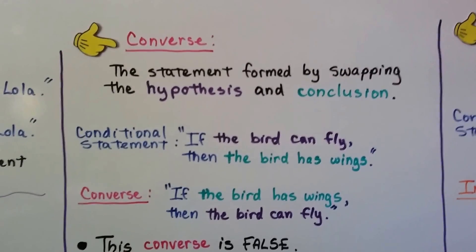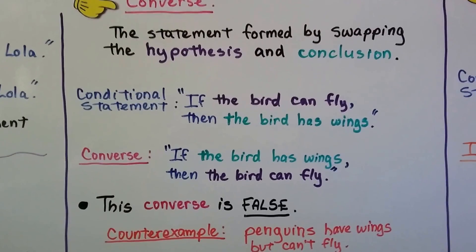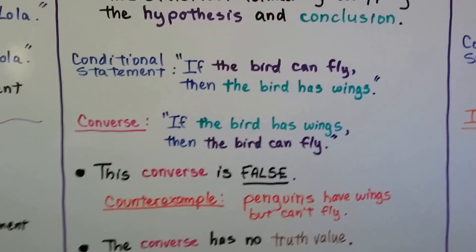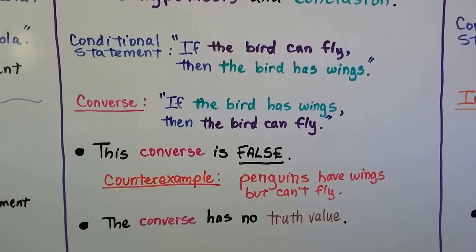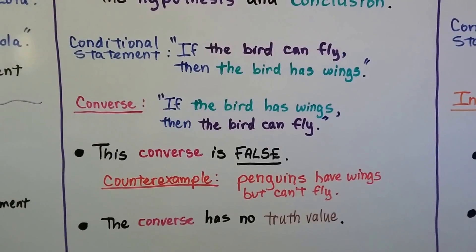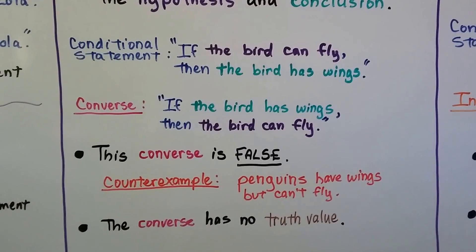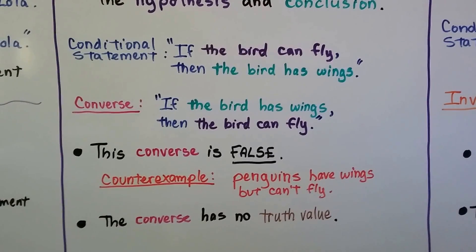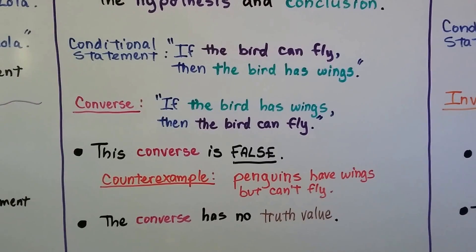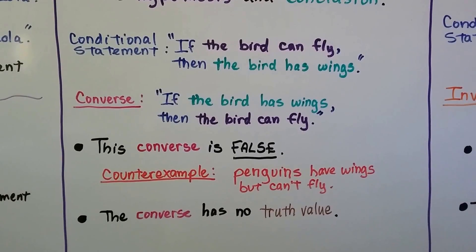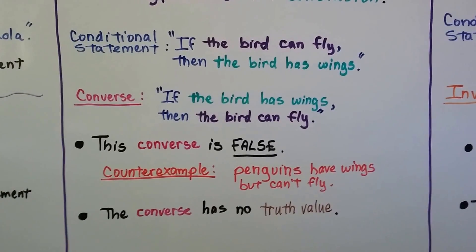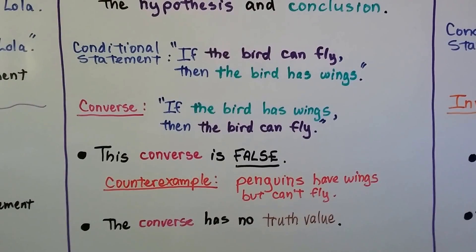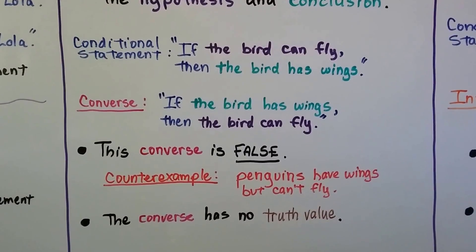Converse is the statement formed by swapping the hypothesis and conclusion. The hypothesis is purple and the conclusion is green — we swap them. So the conditional statement is: if the bird can fly, then the bird has wings. The converse is: if the bird has wings, then the bird can fly. This converse is false — I can think of a counterexample: penguins. They have wings, but they can't fly. So we've proved the converse is false.